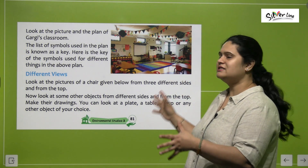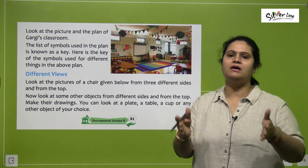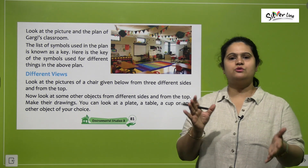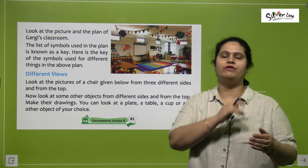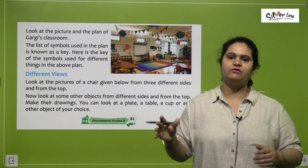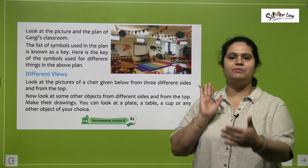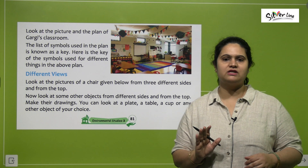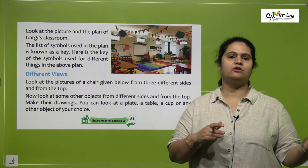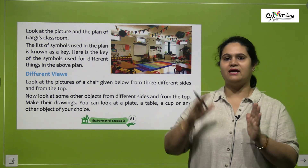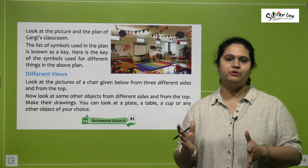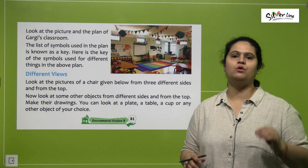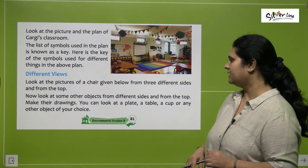Now children, different views kya hoti hain. Koi bhi agar ek cheez hai — suppose we take a chair — so uske different views dekhenge. Aapko when you look at it from different directions, agar aap peeche se dekhenge so you will have a different view of the chair. Aap left taraf se dekhenge to different view, aap right taraf se dekhenge to different view you will see. So every direction has a different view of every object.